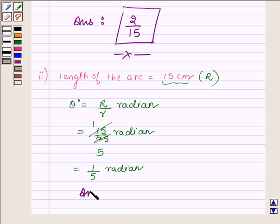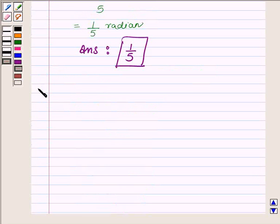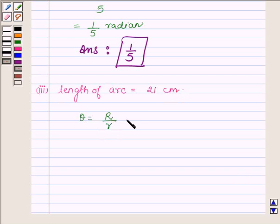Let us now proceed to the third part, where we are given length of arc is equal to 21 cm. Since θ is equal to capital R/small r radian, where capital R is the length of the arc and small r is the length of the pendulum, we have 21/75 radian.